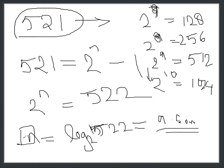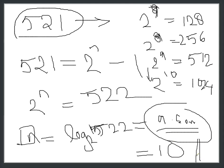Since n is 9 point something and n represents the number of bits we need to signify 522, this can't be a fractional value because we can't cut a bit in half. So we would have to take 10 bits. In binary, if you know the powers of 2, you can directly find it: to represent up to 512 you need 9 bits, and to represent up to 1024 you need 10 bits, so we will require 10 bits to represent 521.